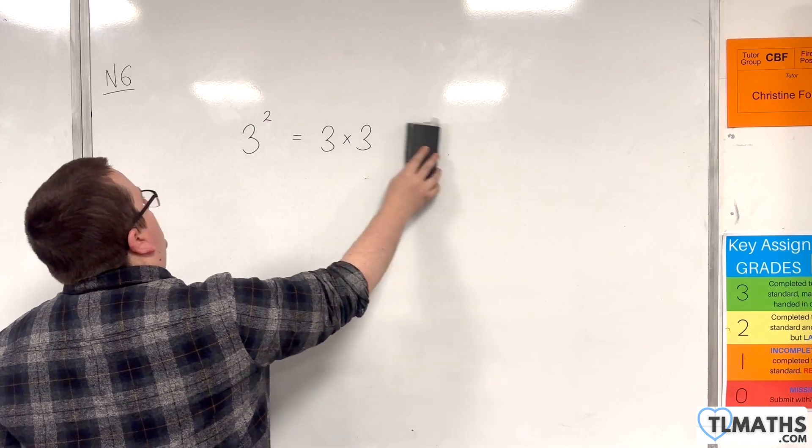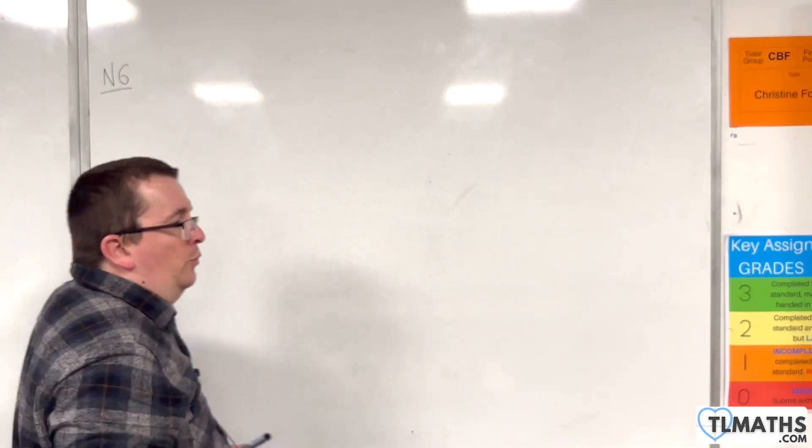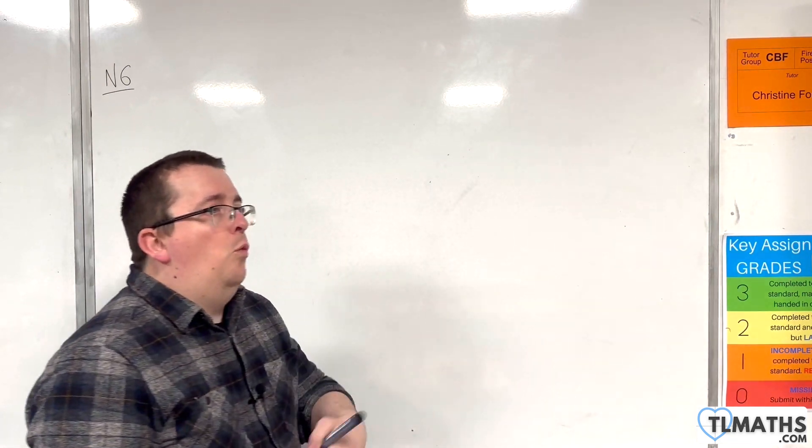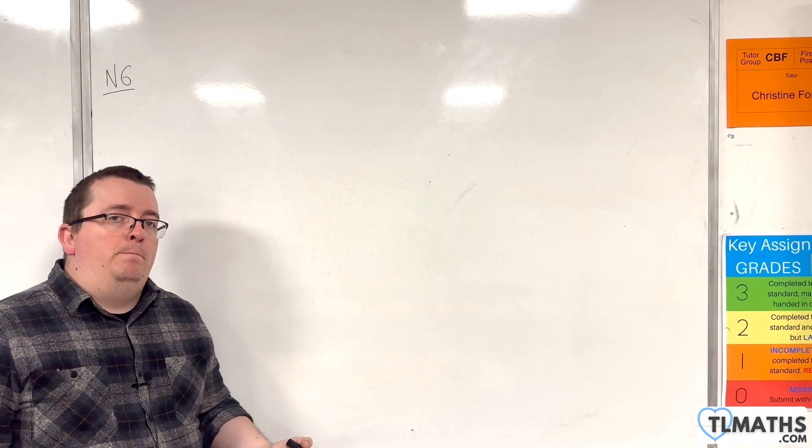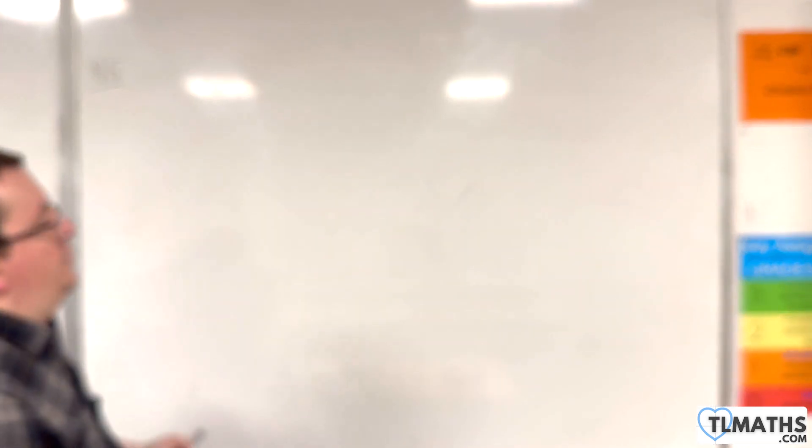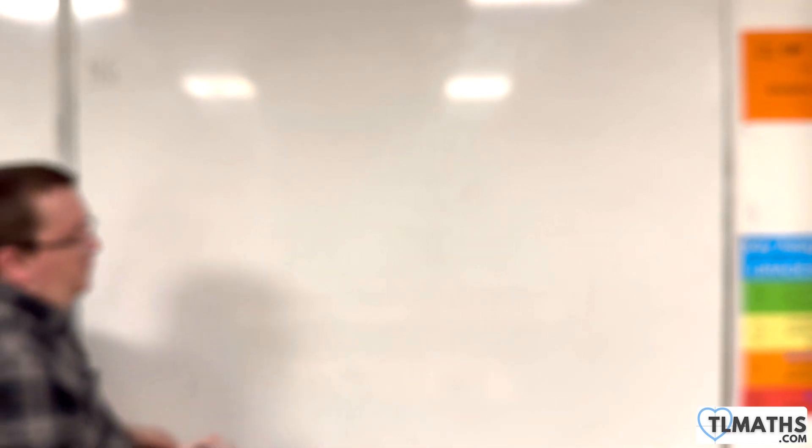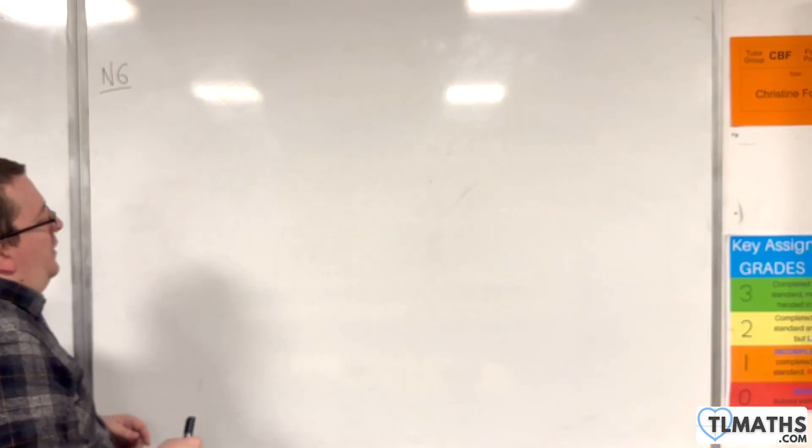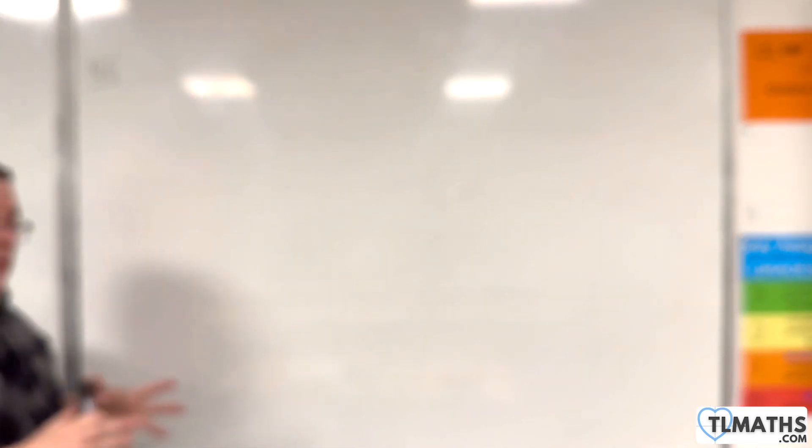So you need to know your square numbers, ideally from 1 up to 15, in preparation for the non-calculator paper, the non-calculator element of GCSE Maths. So let's run through them.